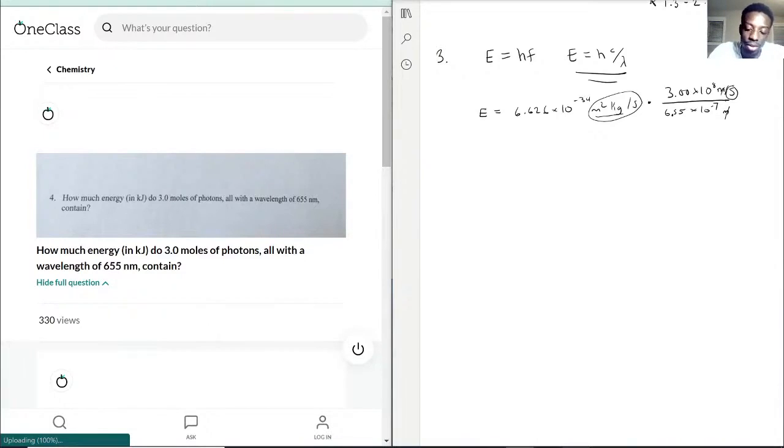So let's do the math real quick. I put it in my calculator. I just did the work beforehand actually. So what I got here was the energy is equal to 3.03 times 10 to the negative 19 joules. And now that's for one particle.